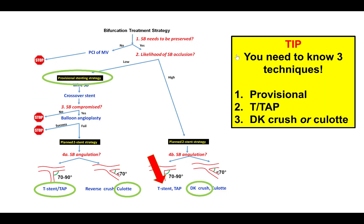Which approach should one take? This has disease in both vessels, and doing a provisional strategy might have the risk of occluding the side branch, the obtuse marginal. So a strategy of T-stent, given that the angulation was about 90 degrees, or TAP might be preferable.